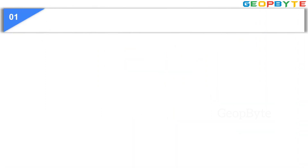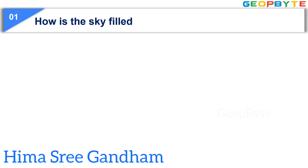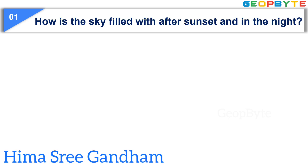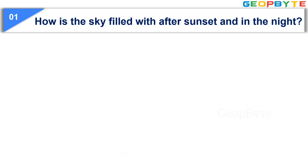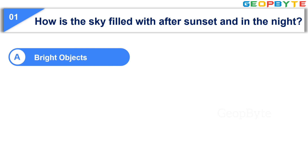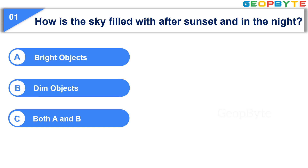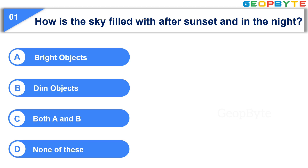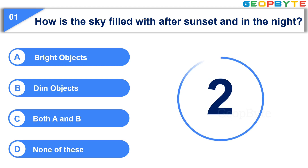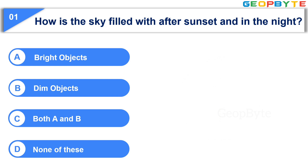The first question is: How is the sky filled after sunset and in the night? Option A: Bright objects. Option B: Dim objects. Option C: Both A and B. Option D: None of these. Your time starts now. Your time is up and the correct answer is Option C: Both A and B.